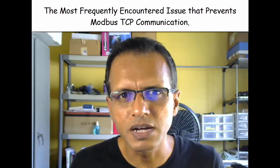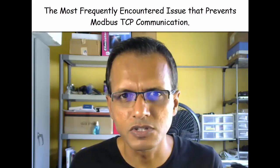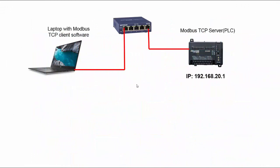So let me give you a brief example of this issue. This diagram shows a very simple Modbus TCP network. I have a PLC which is acting as a Modbus TCP server with this IP address, some network equipment, and then I have a laptop with Modbus TCP client software — this could be an OPC client, it could be HMI software, it could be troubleshooting software, something like that.